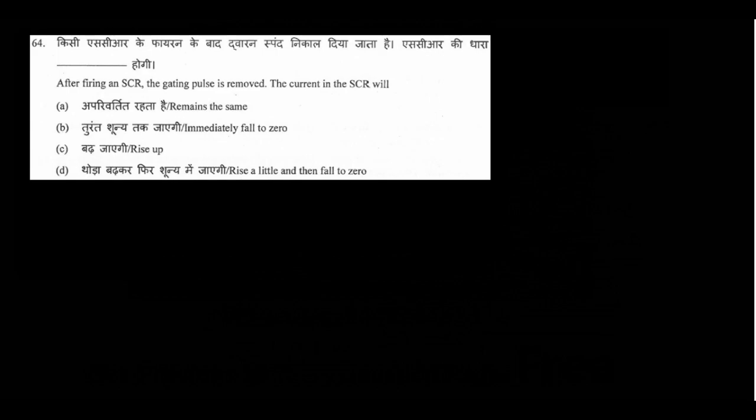Question number 64: after firing an SCR, the gate pulse is removed. The gate pulse is used to fire the SCR at a lower conduction voltage. Once the SCR starts conducting, it will keep conducting even if you remove the pulse. To turn it off, the anode-to-cathode voltage must be brought down. The answer is option A — current remains the same.